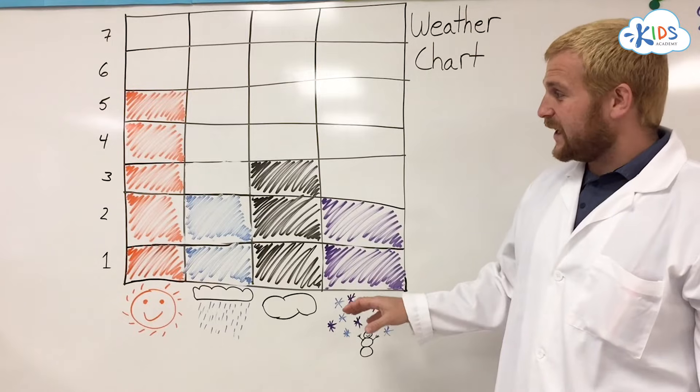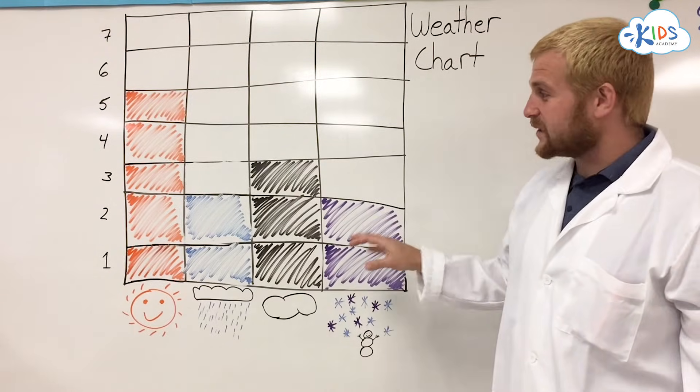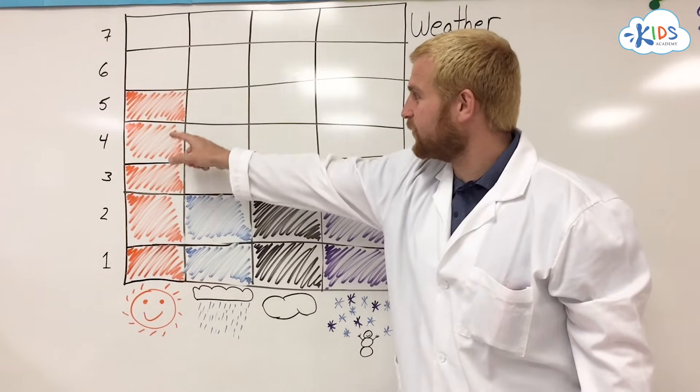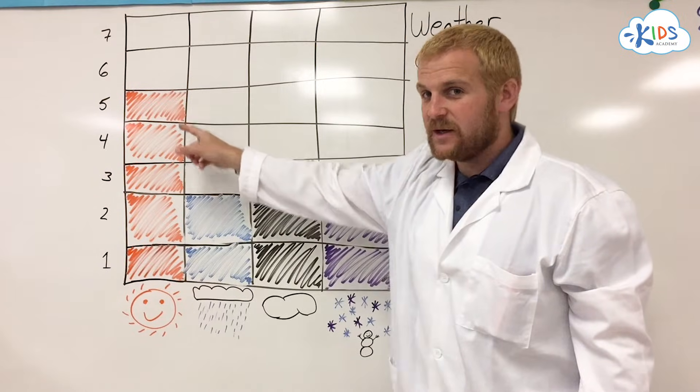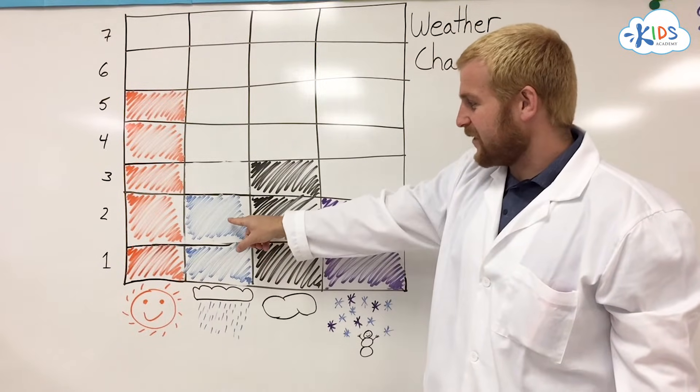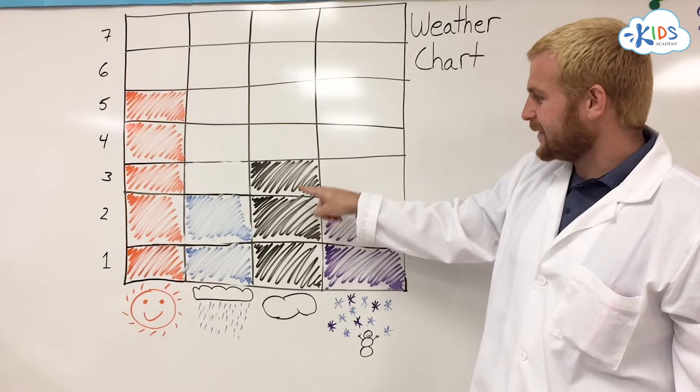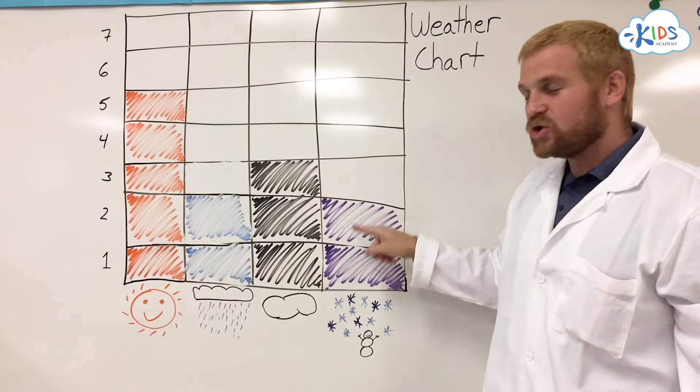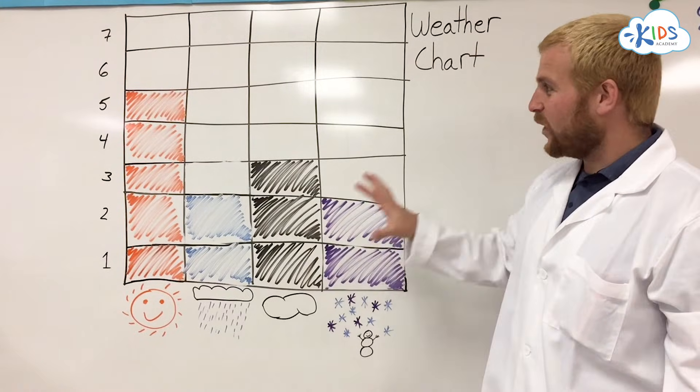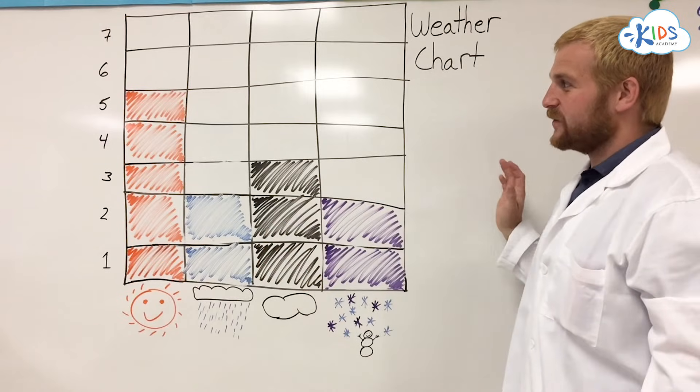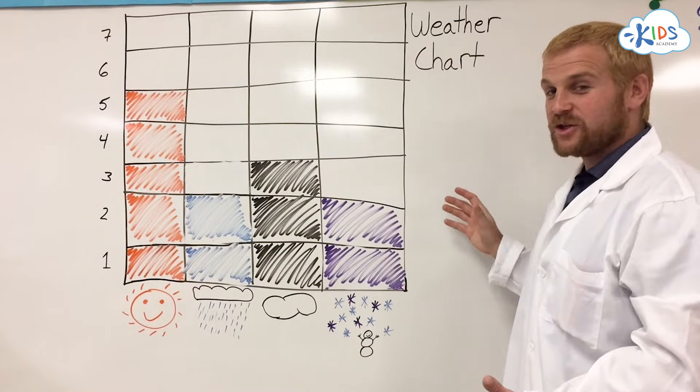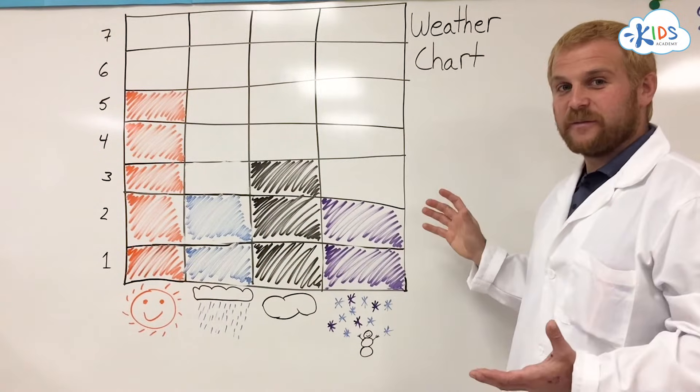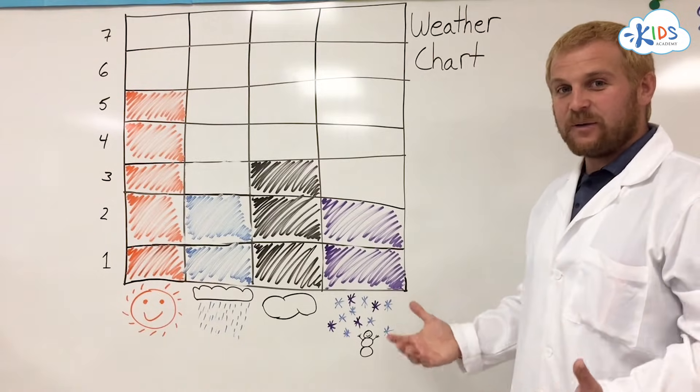If you count up all the days, you have to include all the boxes. So we have one, two, three, four, five sunny days, plus six, seven, eight, nine, ten, eleven, twelve days. So we had twelve days that had all different types of weather. So this weather chart tells us a lot of different information about the different kinds of weather that we've had in our area.